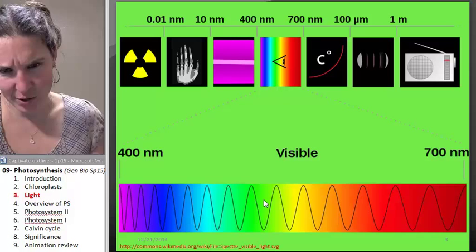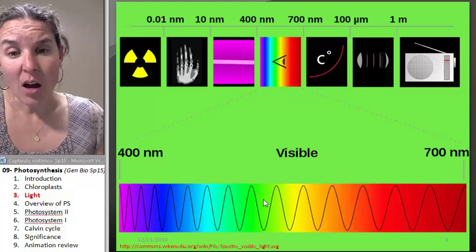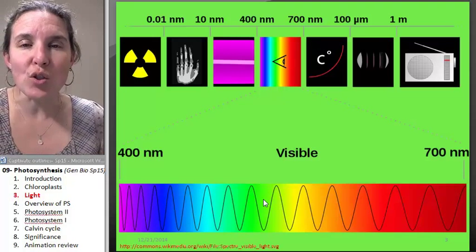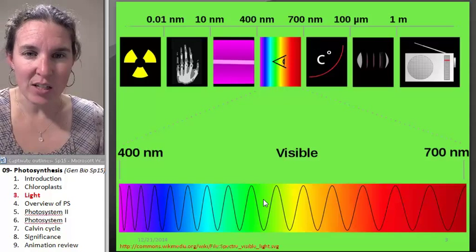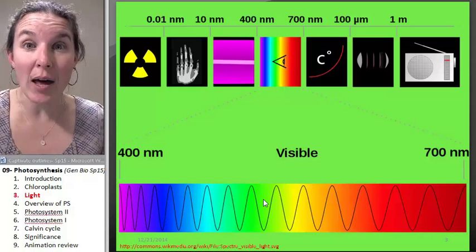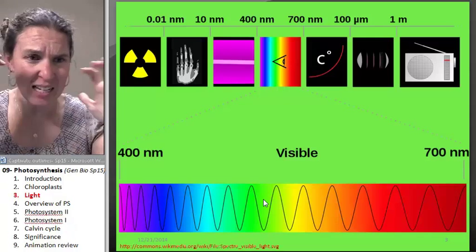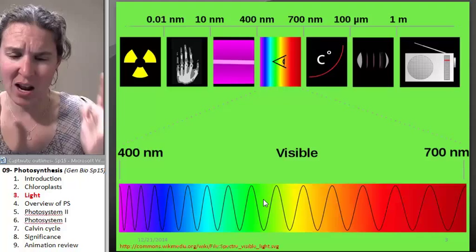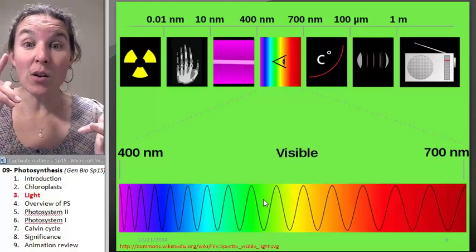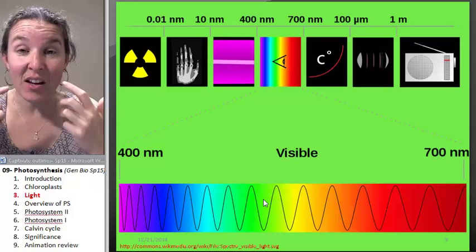all the wavelengths are absorbed into this background, except for the green one. And the green one bounces back into my eyeball, stimulates my cones in my retina, and I perceive the color green.